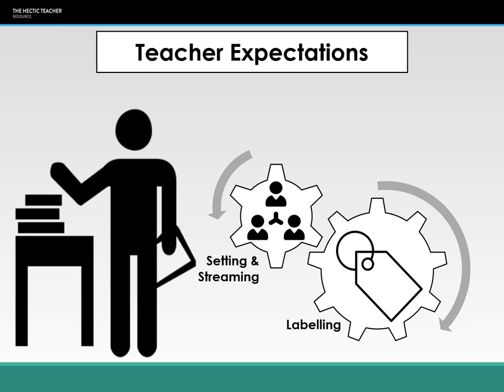This links into our next element of teacher expectations: setting and streaming. Setting refers to ability groups for individual subjects, whereas streaming is ability groups across all subjects — if you're in top set for one subject, you're in top set for all your subjects under streaming, whereas with setting you can be in different ability groups for different subjects. The labelling we've already discussed can lead to students being put into lower sets and streams if they're not hitting the ideal pupil framework or are coming across as less able.